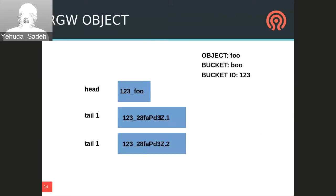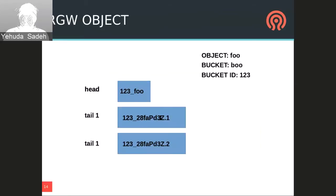Objects are accessed directly without needing to consult any metadata server. The object's head is named by concatenating the bucket index ID and the RGW object name. Once we read the object head, we can access the rest of the object's data because the head holds the manifest, which is embedded in one of the object's attributes. In order to access an object, we only need to have the bucket instance ID and the object's name.